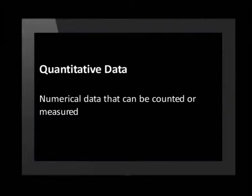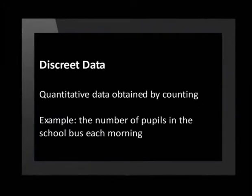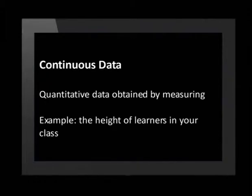Quantitative data that is obtained by counting is called discrete data. For example, the number of pupils in the school bus each morning. Quantitative data obtained by measuring is called continuous data — for example, the height of learners in your class. Now that we have revised the basic definitions, we join Eloise who will take us through measures of central tendency for ungrouped data.